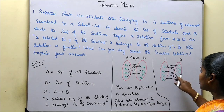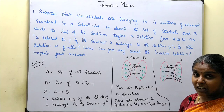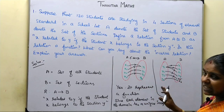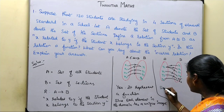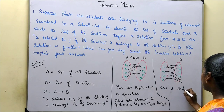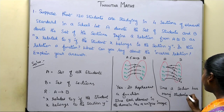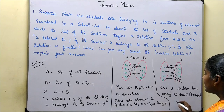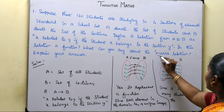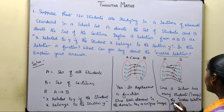In this case, the inverse relation is a relation from B to A, but it does not represent a function. Since a section has many students, one element in the domain maps to more than one image. Therefore, the inverse relation does not represent a function.